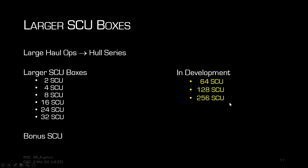They do have larger SCU boxes now — this is fairly new, coming in with the ongoing cargo refactor. We now have 2, 4, 8, 16, 24, and 32 SCU boxes. In development, they've also talked about 64, 128, and 256 SCU boxes, obviously for large hauling operations, because loading a whole Caterpillar-class ship with only one-SCU boxes would take forever. There are clear economics of scale at work there.